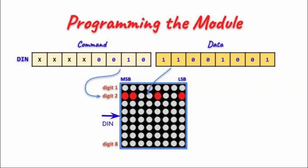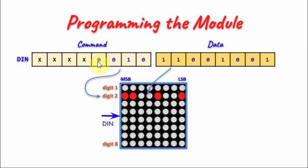As mentioned in previous videos, in order to program an 8x8 dot matrix display controlled by the MAX7219, we need to send two bytes. The first byte is the command byte and the second byte is the data byte. The least significant nibble of the command byte determines which row will be selected, from row 1 to 8. If this value is 0, the device is turned off; otherwise, the data is displayed on the screen.